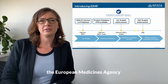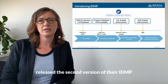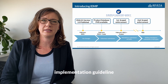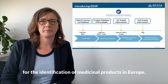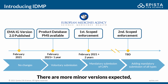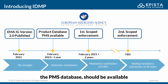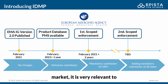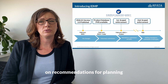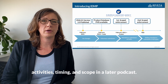In February 2021, the European Medicines Agency released their second version of their IDMP implementation guideline, named Product Management Services Standards for the Identification of Medicinal Products in Europe. There are more minor versions expected, but a year from this release date, the Product Management Services, or PMS, database should be available and voluntary submission may be initiated. For those marketing authorization holders who have or who are planning to have registered products in the European market, it is very relevant to start planning for this requirement now. We will go into more detail on recommendations for planning activities, timing, and scope in a later podcast.